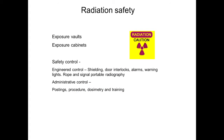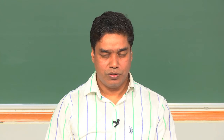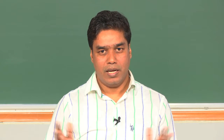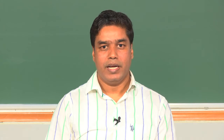Under engineering control for safety, you have shielding, door interlocks, alarms, warning lights, and ropes and signals around portable radiography done on site. You might have seen this kind of signals and signs in and around areas where there is radiation. This must be present around the lab where x-ray radiography is done, so that people know there is a chance of exposure to radiation in that zone.